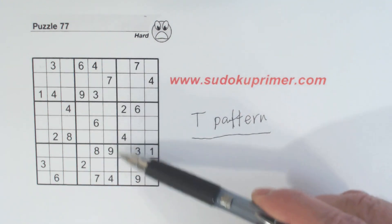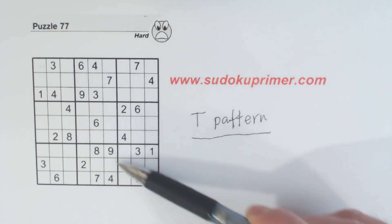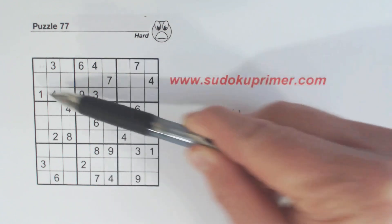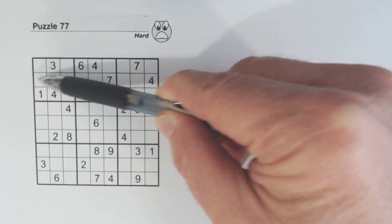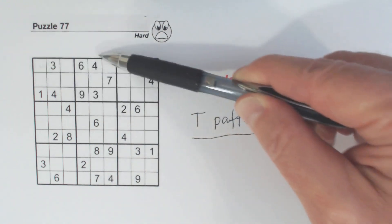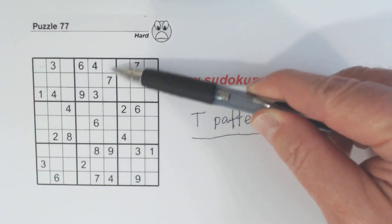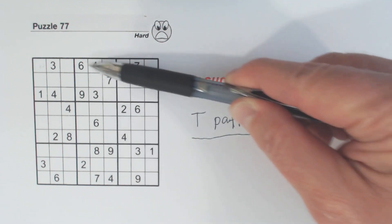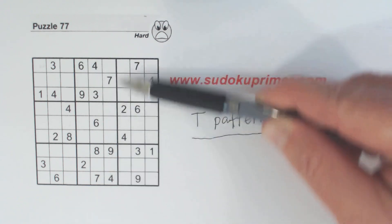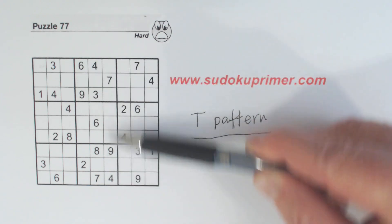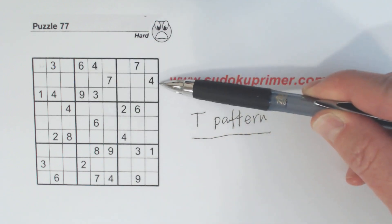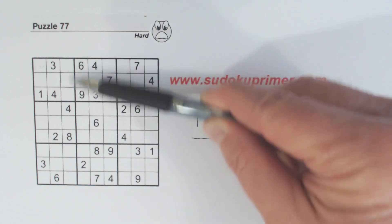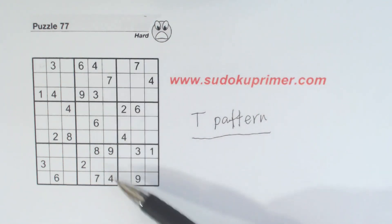What you can do with the T pattern is look at the top of the T and look in that column, or look through the middle of the T in that row, and see if we can find numbers outside of the box that aren't in the box already. Here we've got a nine and a four, and there's already a nine and a four in here. And here's a four, and there's already a four in there. So this T pattern isn't going to help us much right now — it'll help us later.